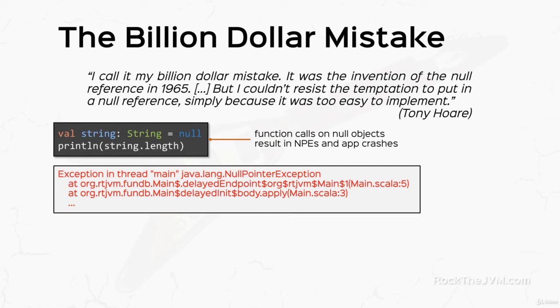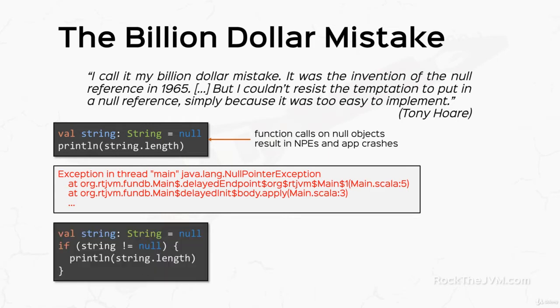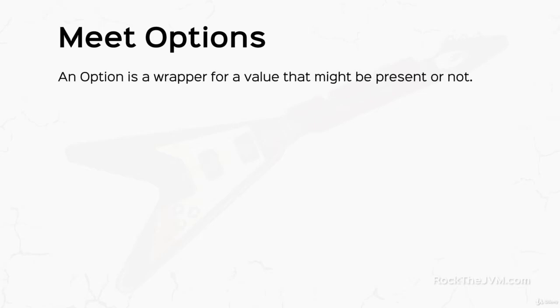To guard against these null pointer exceptions, we often resort to all sorts of checks, which leads to spaghetti code and things that are hard to understand. So we need some kind of data type that could encapsulate the possible absence of a value. These are options.